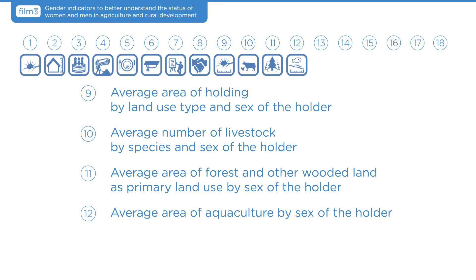Discriminatory practices related to land and other forms of critical assets largely determine women's economic dependency and vulnerability. For example, the lack of land hinders their access to credit. Collecting data on livestock is also important, as livestock are considered central to the survival of the rural poor in some areas.